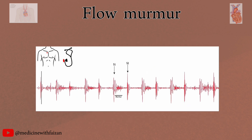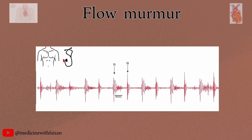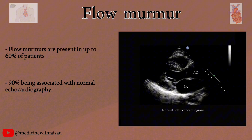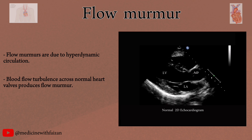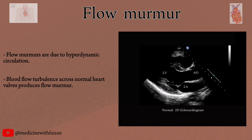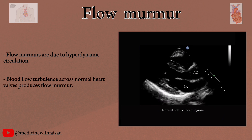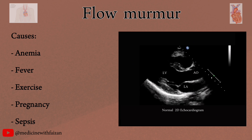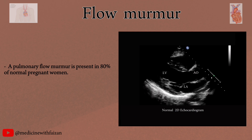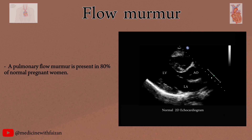Listen again to a patient with systolic flow murmur. Flow murmurs are present in up to 60% of patients, with 90% being associated with normal echocardiography. Flow murmurs in adults are usually the result of hyperdynamic circulation. An increase in blood flow across a structurally normal valve will cause turbulence and an associated murmur. Common causes of hyperdynamic circulation include anemia, fever, exercise, pregnancy, and sepsis. In fact, a pulmonary flow murmur is present in 80% of normal pregnant women.